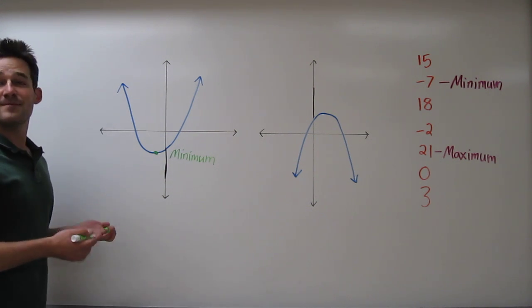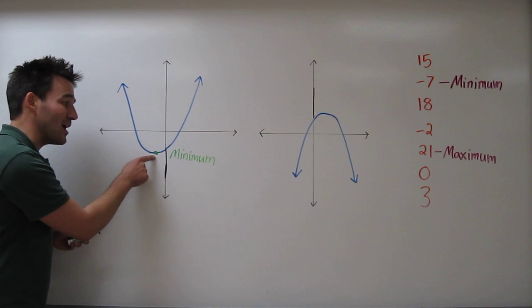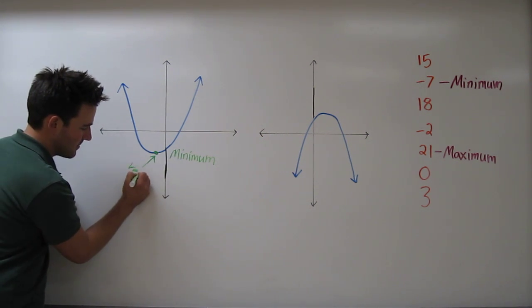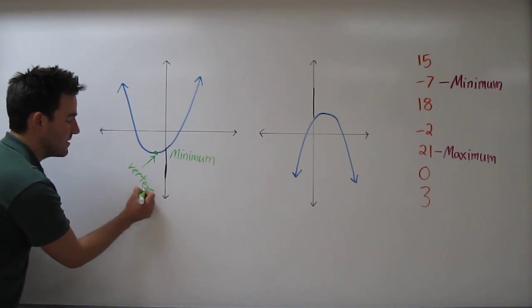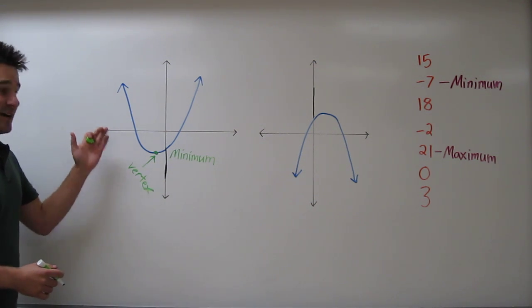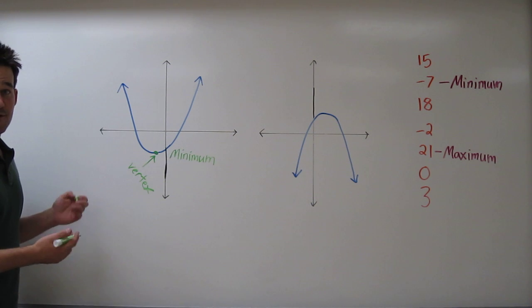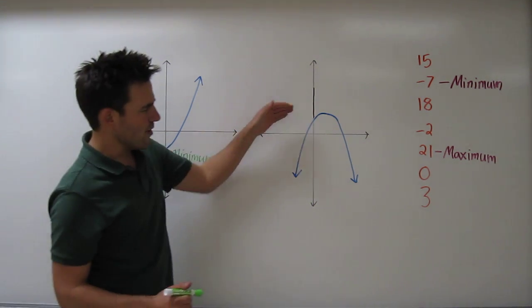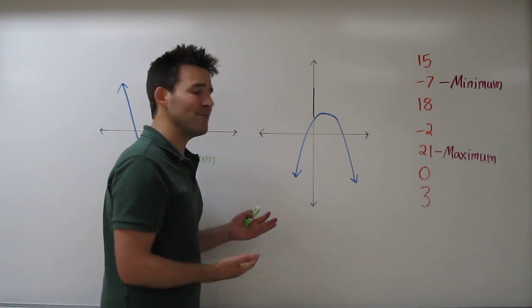Now if you remember some stuff about parabolas, this is also called the vertex. So on this parabola, the vertex is where the minimum value of the function is. Now let's look at this one. On this one, we have a different situation.